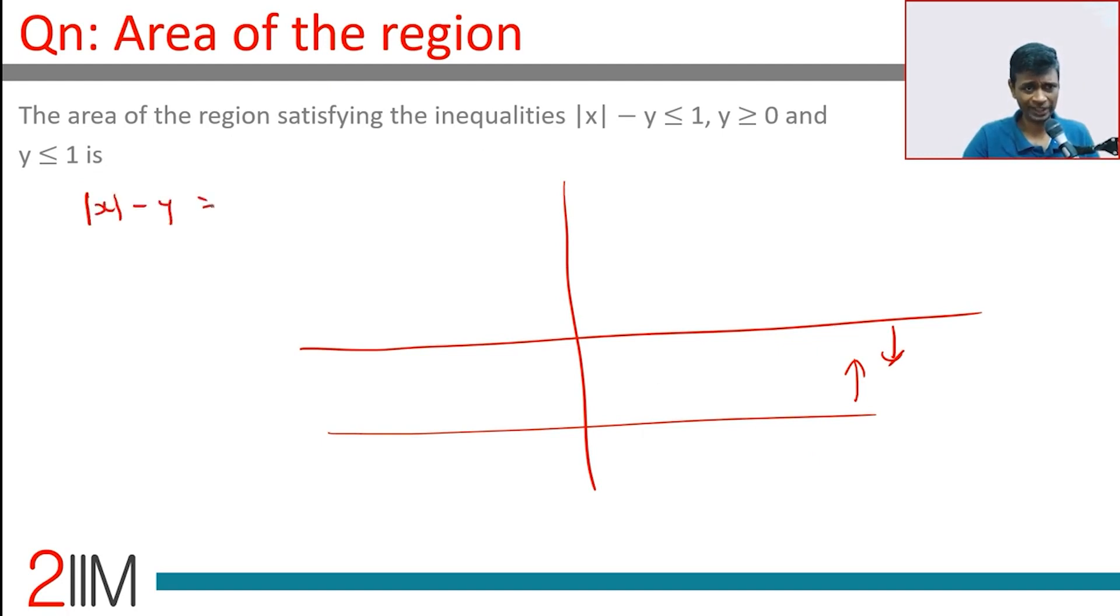|x - y| = 1, or y = |x| - 1. Now, y = |x| is a curve like this. |x| - 1 will be a curve like this, shift it down by 1.